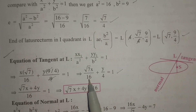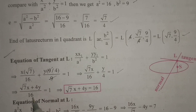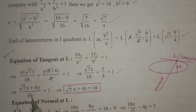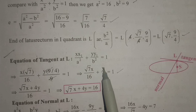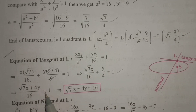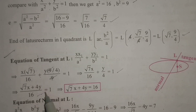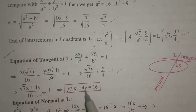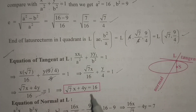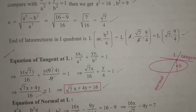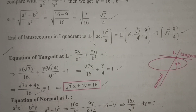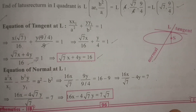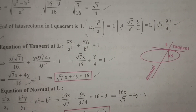Multiplying throughout by 16: √7x plus 4y equals 16. So the equation of tangent at the end of the latus rectum in the first quadrant is √7x plus 4y equals 16.